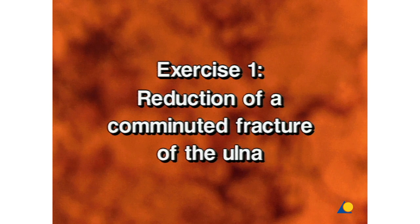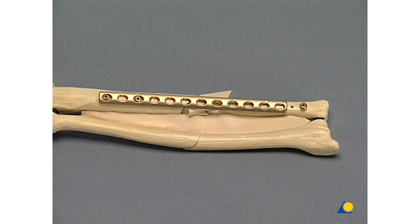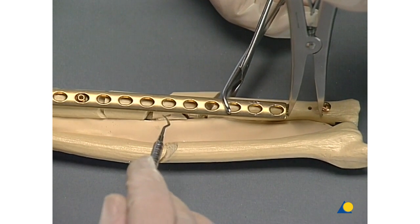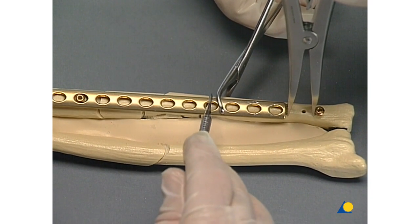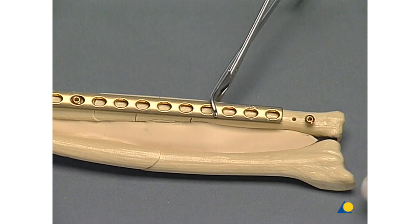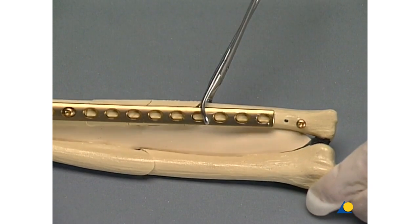Exercise 1: Reduction of a comminuted fracture of the ulna. In a complex forearm fracture, the mandatory anatomical reduction may be difficult without risk to vascularity. Distraction is achieved by fixing on the proximal fragment an LC-DCP of pre-planned length — 12 holes in this instance — and placing a screw in the distal ulna about a centimeter beyond the plate. The surgeon uses a spreader to produce distraction and indirect reduction of the fragments under the plate, which now bridges the fracture. Risk to the vascularity of the fragments is diminished because none of the fragments is handled directly. Of course, the radius must also be fixed.